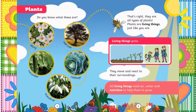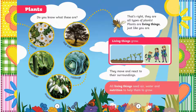Chapter 1: Plants. Do you know what these are? Daisy, oak tree, cucumber, cabbage, snowdrop. That's right. They are all types of plants.